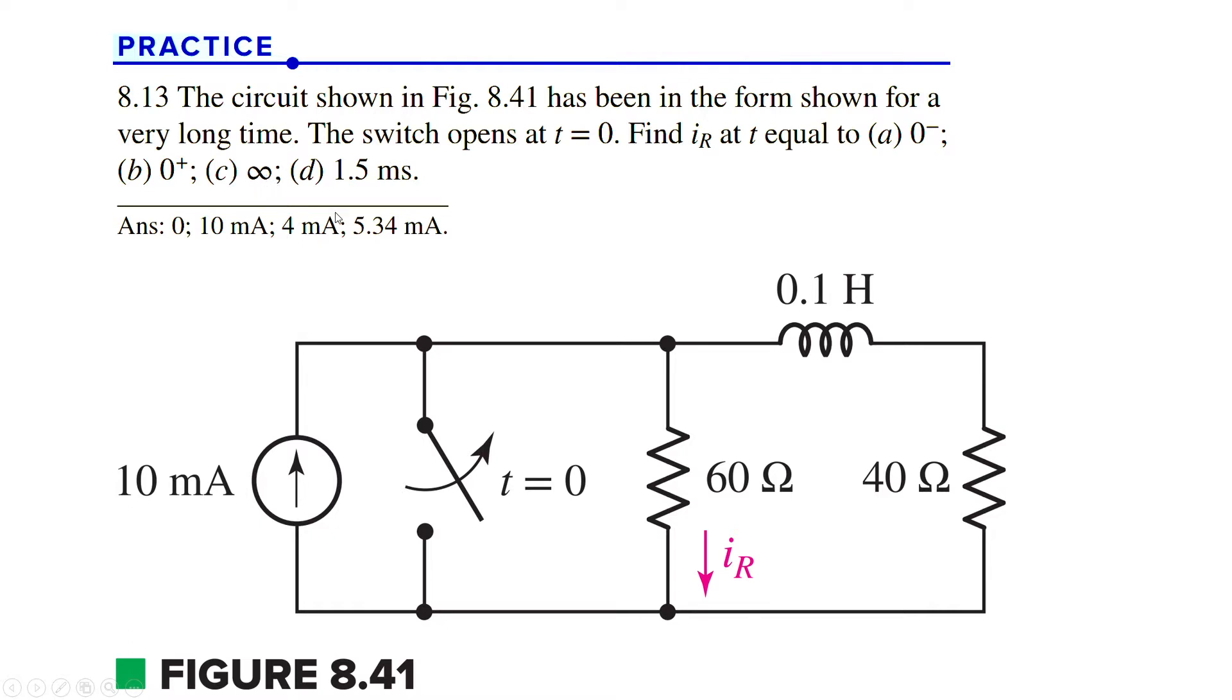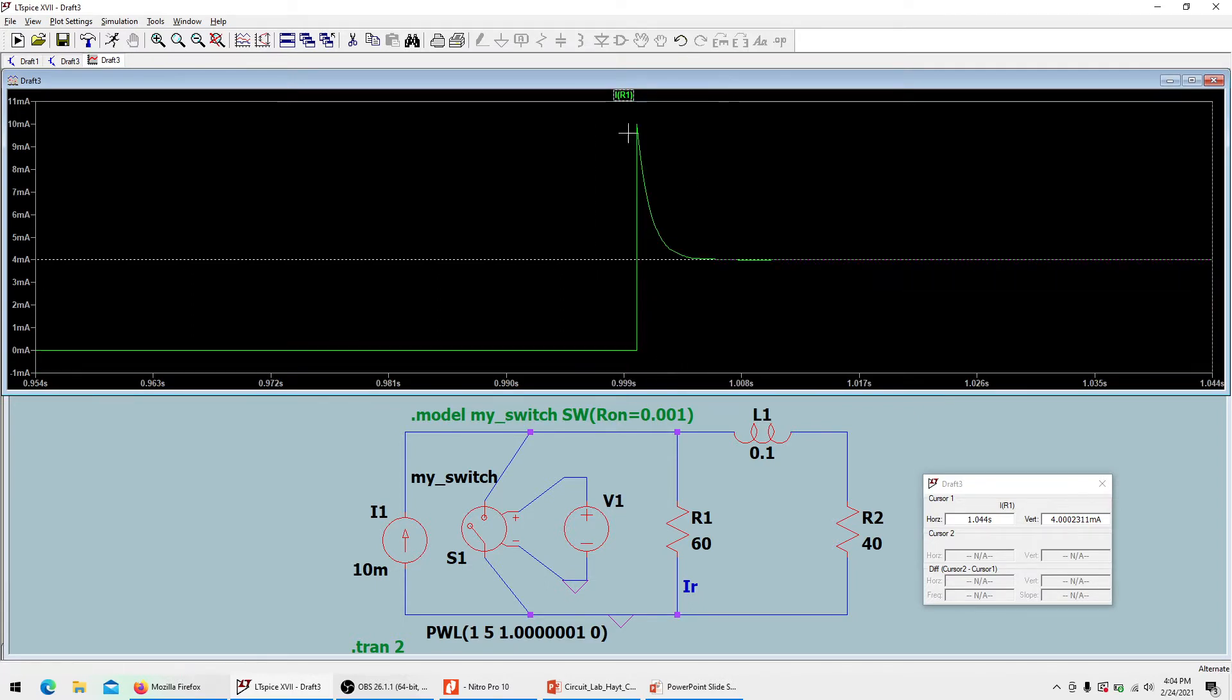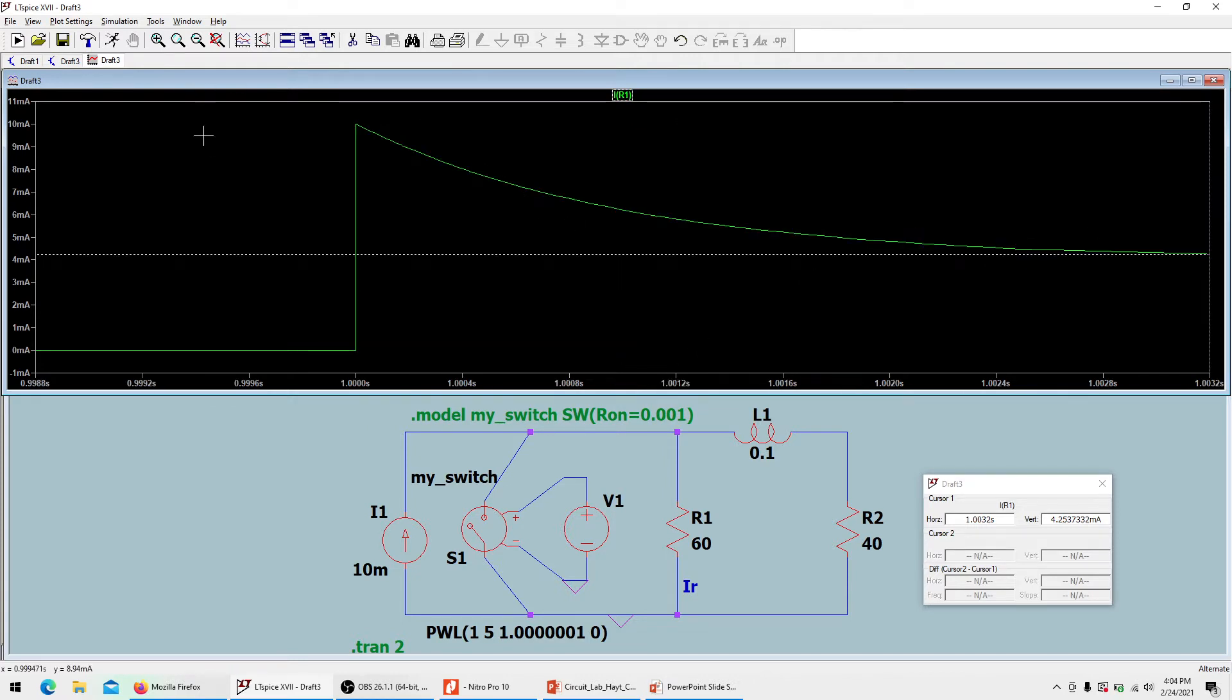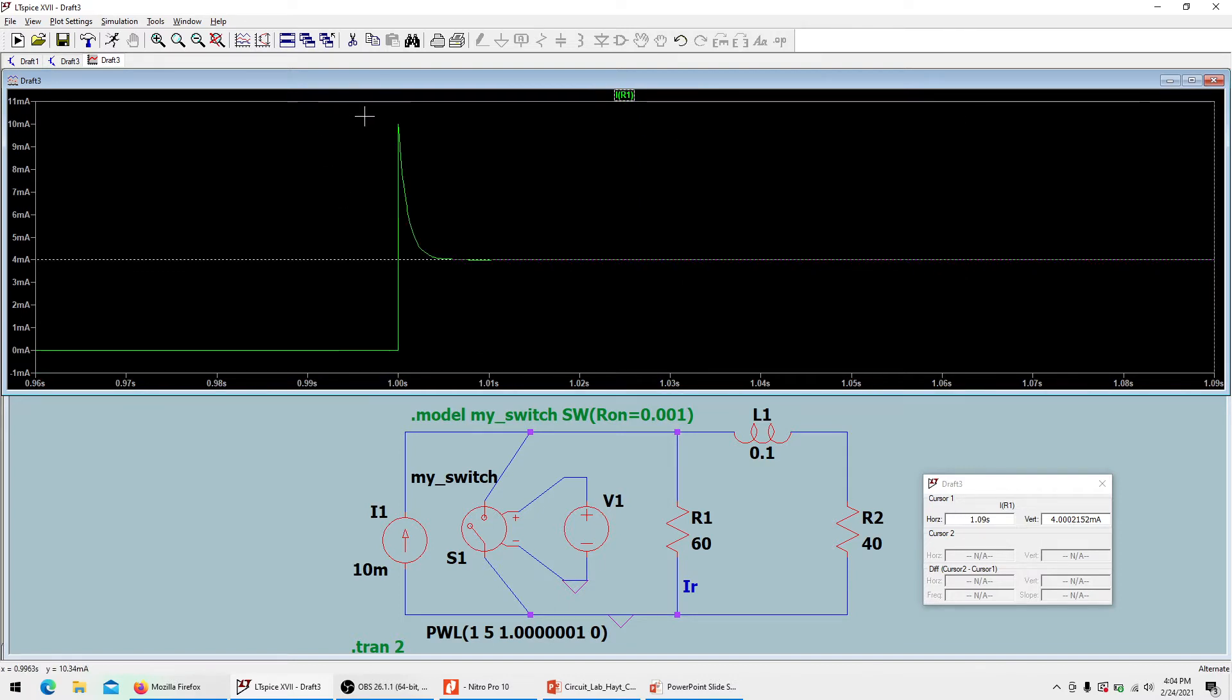At 1.5 milliseconds it was 5.34 milliamps. When we looked at this circuit and simulated it, the explanation is this: If you look at the steady state, this is the steady state. We bring in the cursor here and we see that it is 4 milliamps.